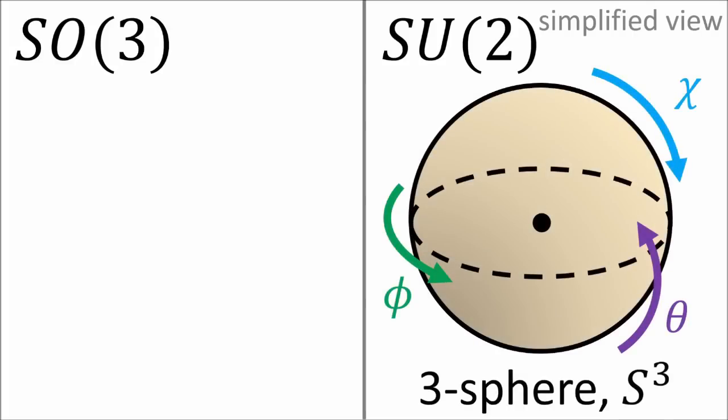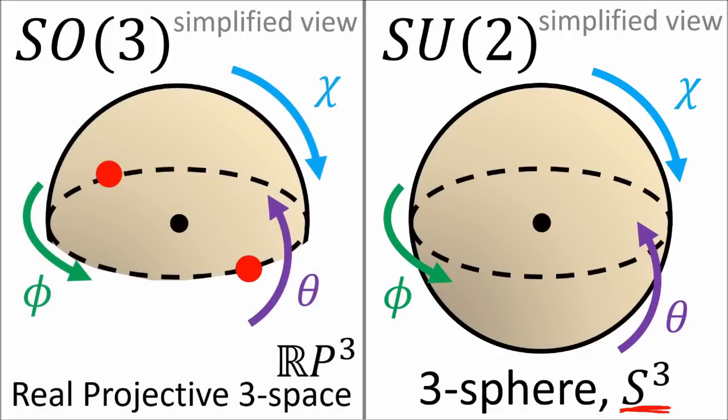It turns out that the space of SU2 matrices looks like a three-dimensional sphere that lives in four-dimensional space, called the three-sphere, or S3 for short. This is a simplified view that looks more like a two-dimensional sphere, because a true three-dimensional sphere is too difficult to draw. A true three-sphere has points specified by three angles instead of two. The space of SO3 matrices looks like a real projective three-space, RP3, which sort of looks like half of a three-sphere where if we walk off one edge, we get teleported to the other side.